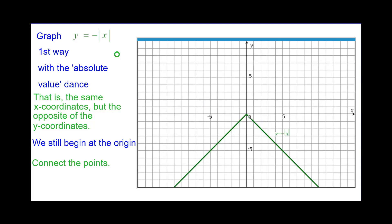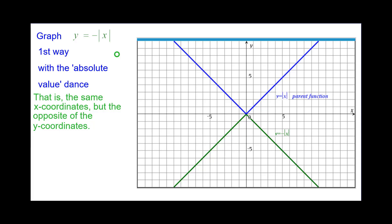Connecting the points, we get the beautiful V for the absolute value except it's upside down. Comparing that to the parent function, and remember, the graphs are reflections of each other about the x-axis.